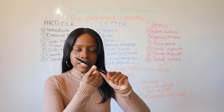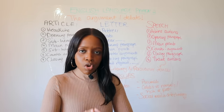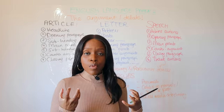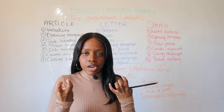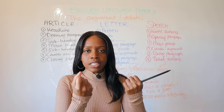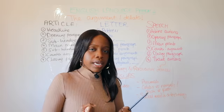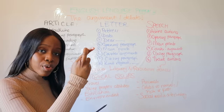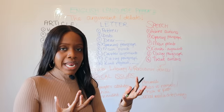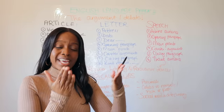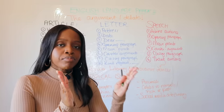Persuasive devices include direct address, rhetorical questions, and inclusive pronouns like 'we' that make your audience feel included. Make sure you're including those. And of course, use ambitious language so that you can hit your AO6, which is your SPAG points.